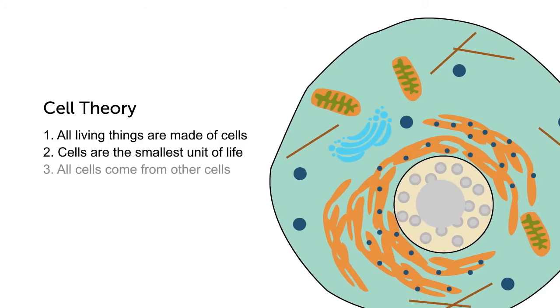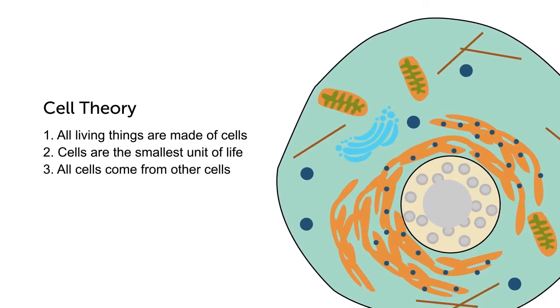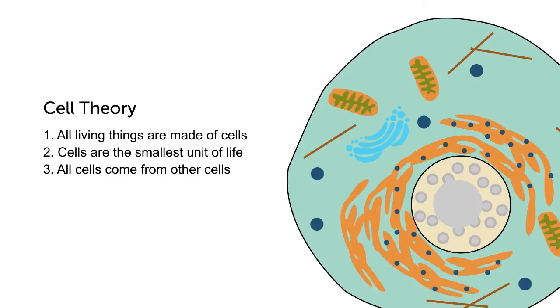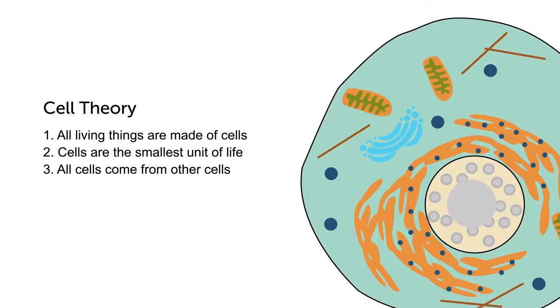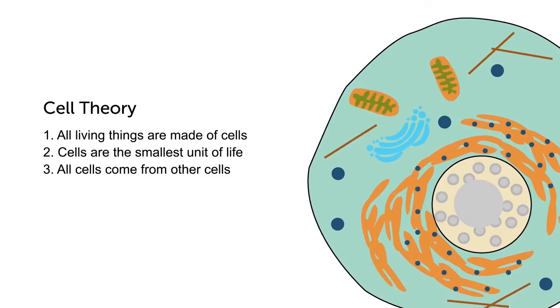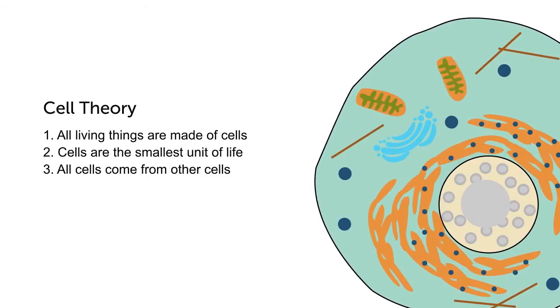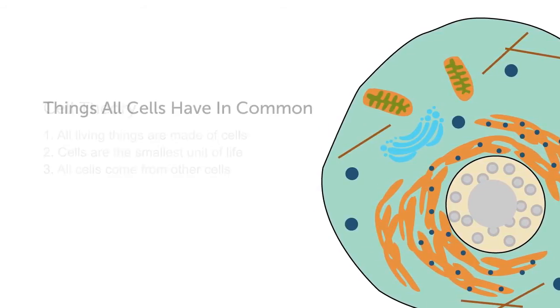3. All cells come from pre-existing cells. That is, every cell comes from cells that already existed. Cell theory explains how cells work, but there are also three things that all cells have in common.